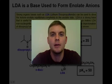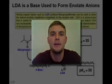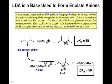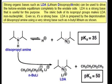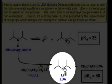In this webcast we're going to look at the appropriate conditions for the efficient formation of the enolate anion. Formation of enolate anions requires an appropriate base. The base that has stood the test of time for the efficient formation of enolate anions is known as lithium diisopropyl amide.